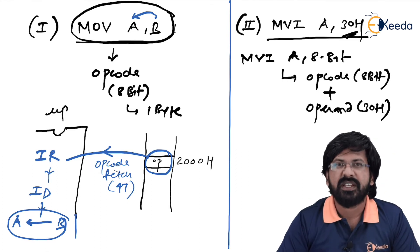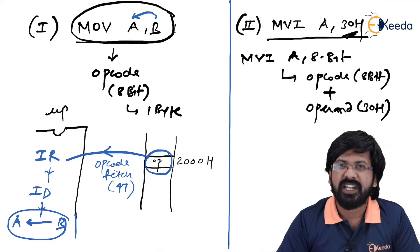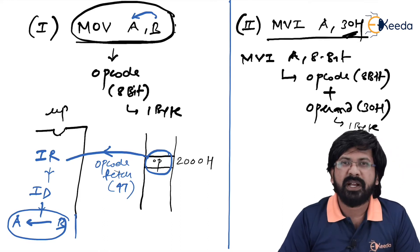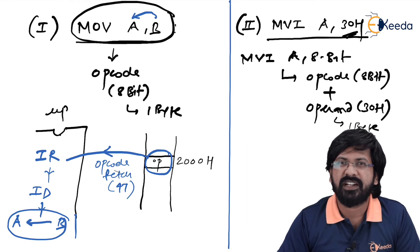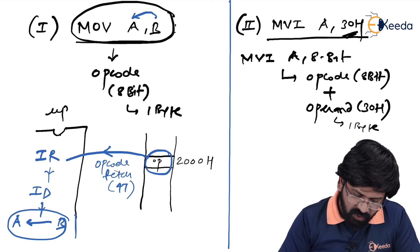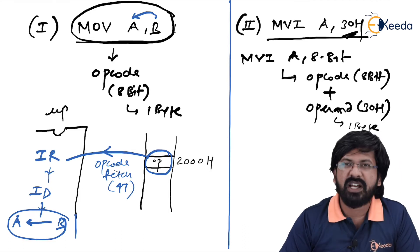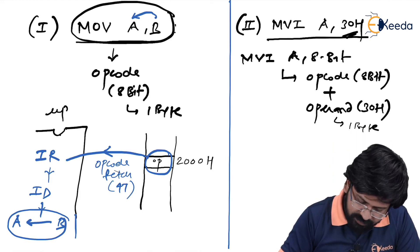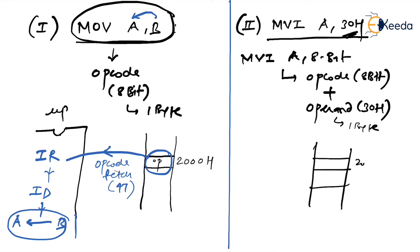The size of the opcode is 8-bit, 1 byte. The operand 30H is also 1 byte. So 1 byte of opcode plus 1 byte of operand takes 2 memory locations, meaning MVI A,30H is a 2-byte instruction. In memory it occupies 2000H and 2001H — opcode in the first location and operand 30H in the second. Step 1 is over; step 2 begins.